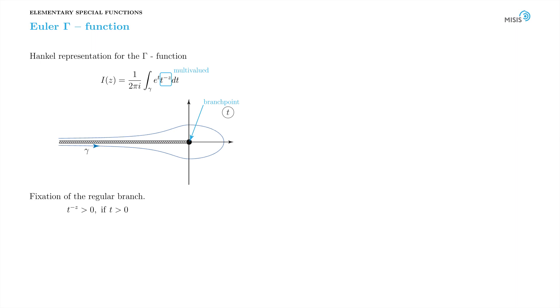So basically, the argument of t is said to be negative pi at the lower bank of the branch cut and pi at the upper bank. The exact shape of the contour is quite arbitrary. The only essential detail is that it should circle around the branch point and have minus infinity as its start and end point.